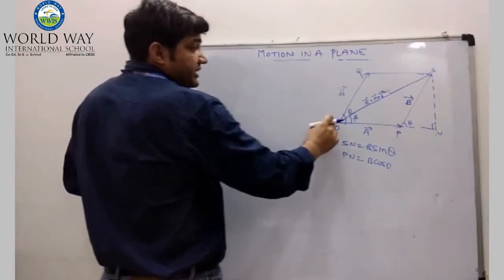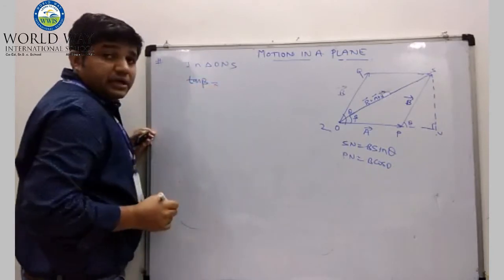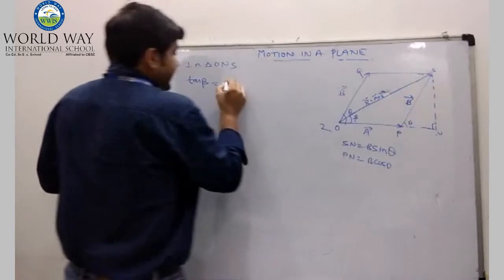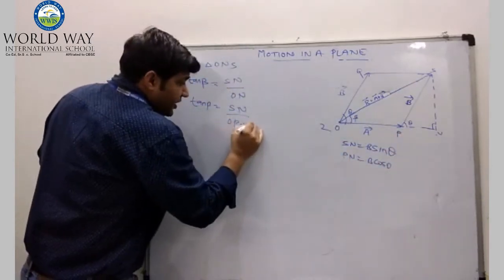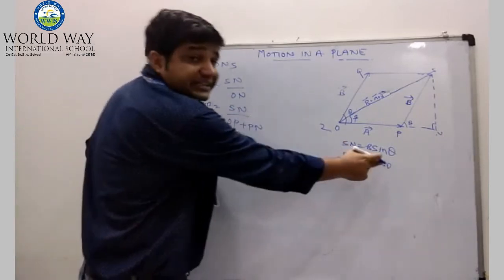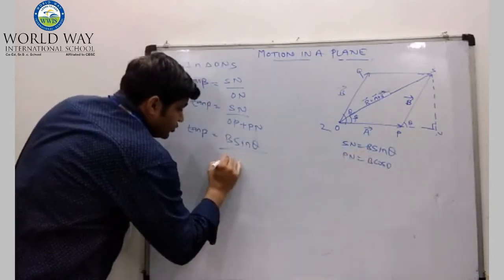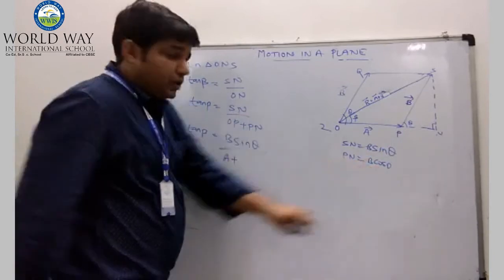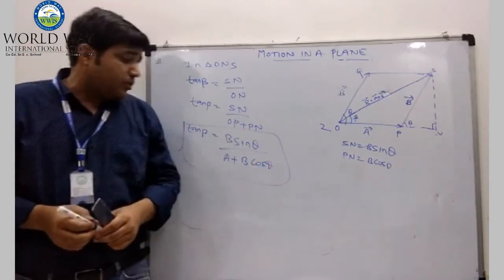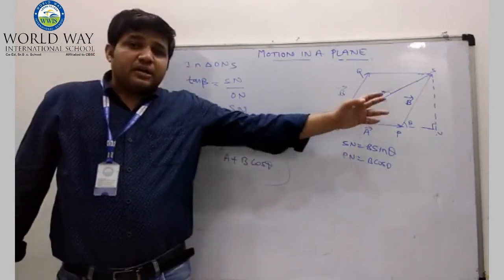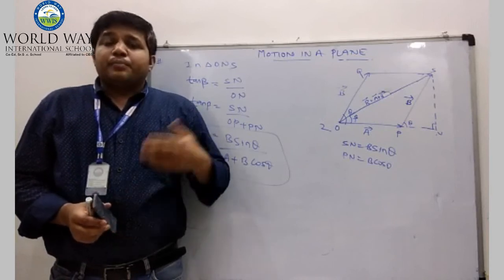Now, in the same triangle SON, we find the direction of the resultant. The direction is given by tan beta, where tan beta equals perpendicular upon base — that is SN upon ON. So tan beta equals SN upon (OP plus PN), which gives tan beta equals B sin theta upon (A plus B cos theta). This is the direction of the resultant vector R. I hope you understand the topic and you liked it. Thank you, students. In the next class, we will discuss the product of vectors. Thank you.